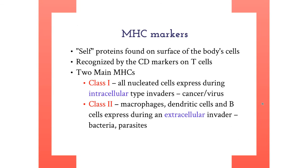The second surface marker on the T cell is the CD marker. The CD markers on T cells are used to recognize MHC proteins on host cells. MHC molecules are self-proteins and are used by APCs, antigen-presenting cells, to present antigens to the T cells. There are two classes of MHC molecules: MHC class I and class II. MHC class I are expressed on nucleated cells and present intracellular antigens to cytotoxic cells. MHC class II are expressed on macrophages, dendritic cells, and B cells, and are used to present extracellular antigens to helper T cells.